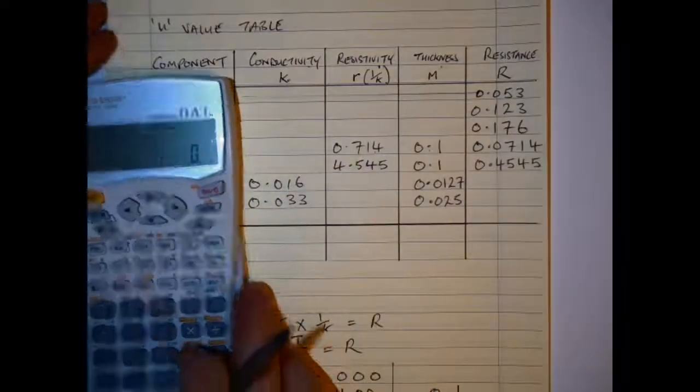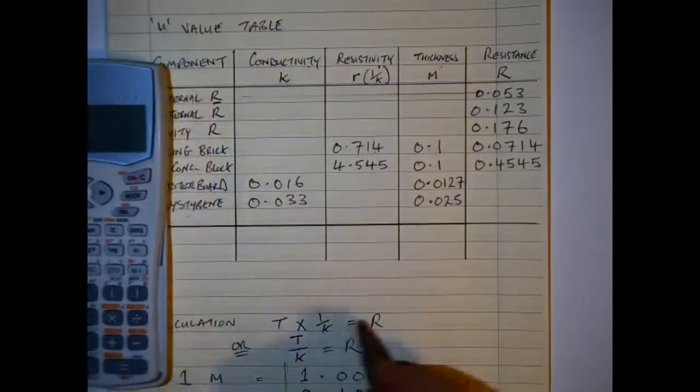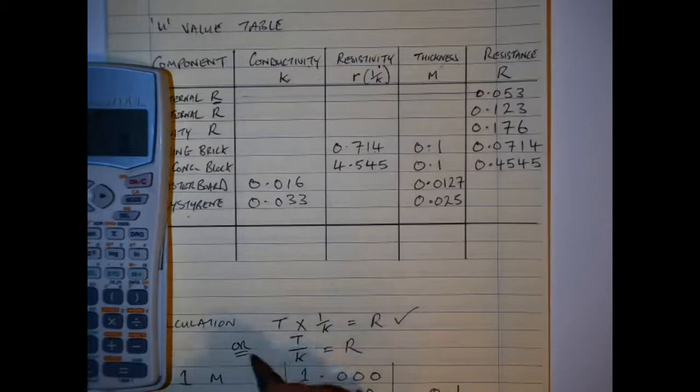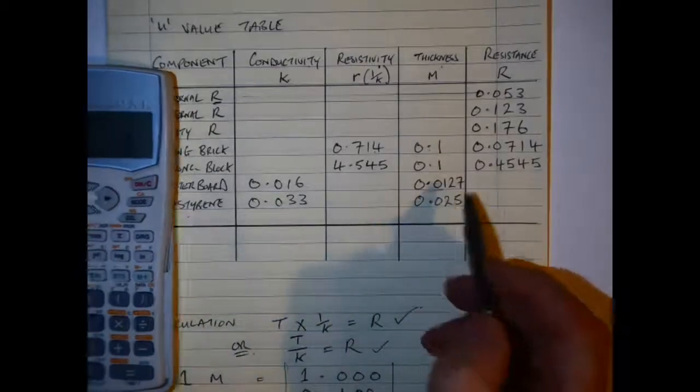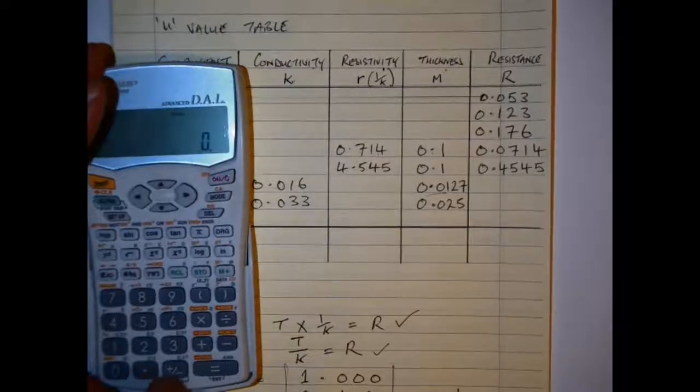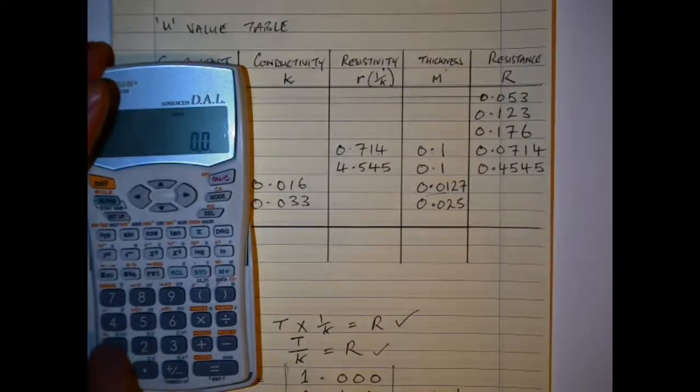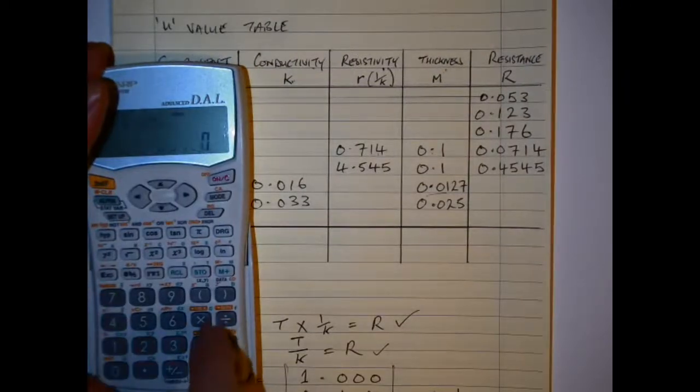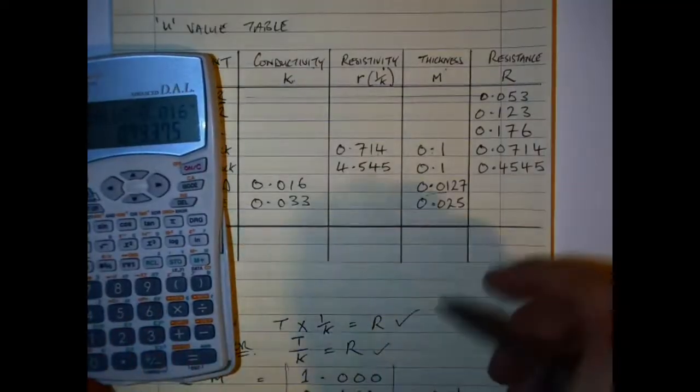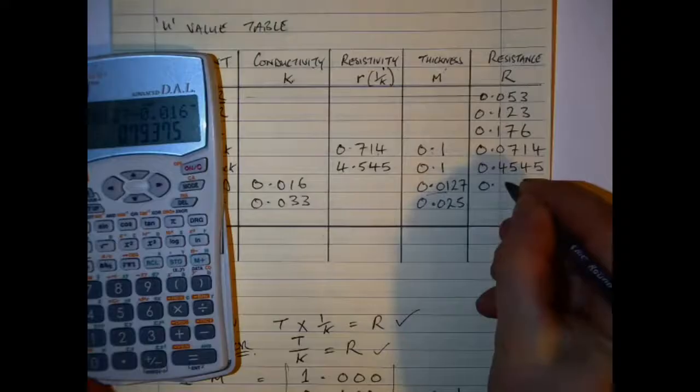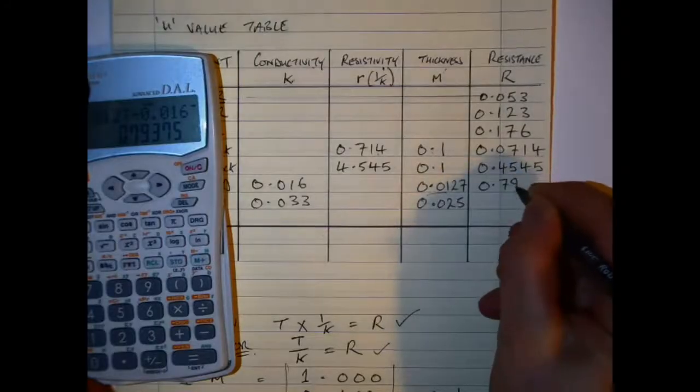Then for our conductivity, and we have a conductivity value, what we're going to do is we'll take our thickness and enter it in, and divide it by the conductivity value of 0.016, and that gives us our value of 0.7937.